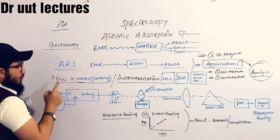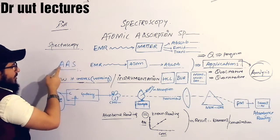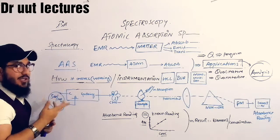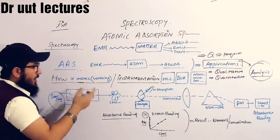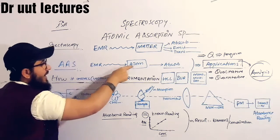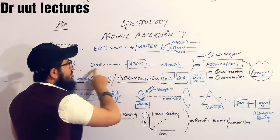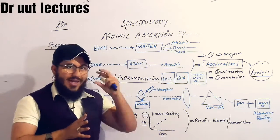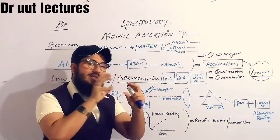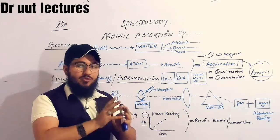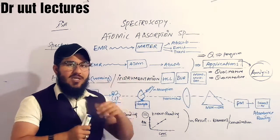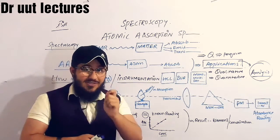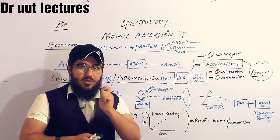What is Atomic Absorption Spectroscopy? You can identify from the name also — here we are talking about the atom which is going to absorb. Such kind of spectroscopy in which absorption of electromagnetic radiation occurs. When electromagnetic radiations are targeted on the atom and the atom absorbs these electromagnetic radiations, that is known as Atomic Absorption Spectroscopy. The principle it follows is absorption.